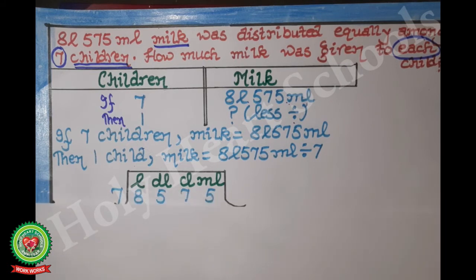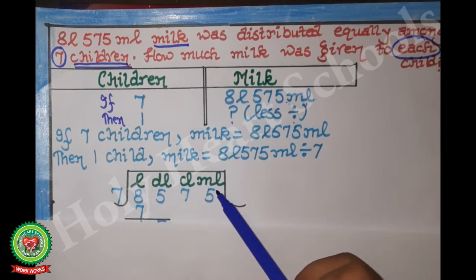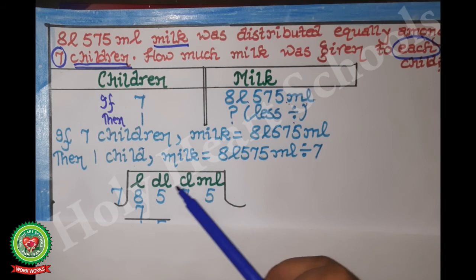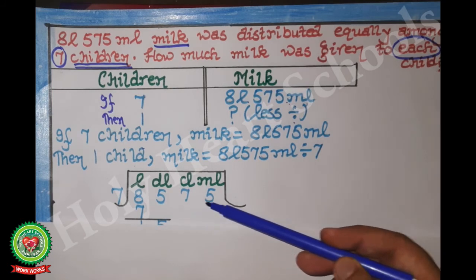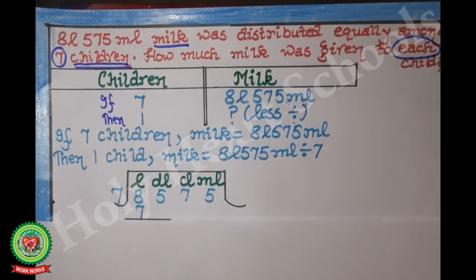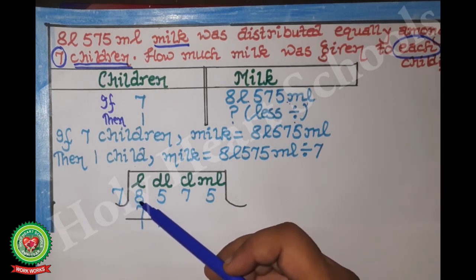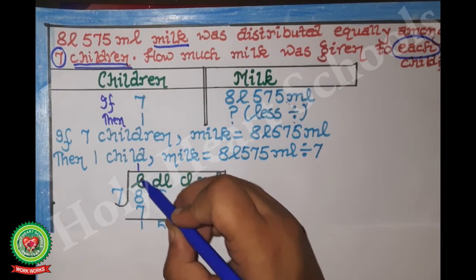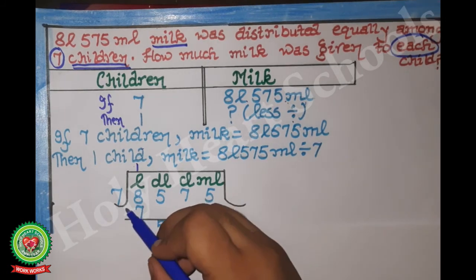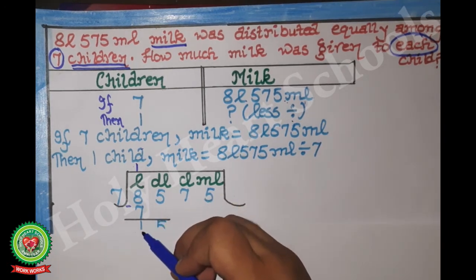We make a division sign and inside it write the metric system table from liter: liter, milliliter. We arrange the numbers below it and do the divide. On the 7 table, 8 doesn't come exactly, so we take 7. 7 × 1 = 7. Then 8 minus 7 = 1.